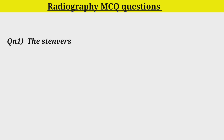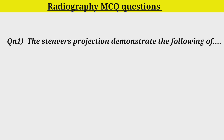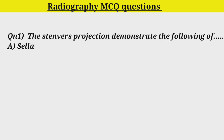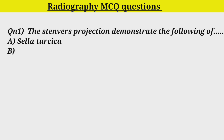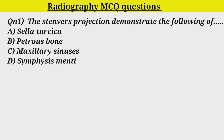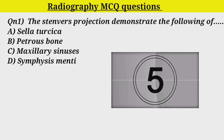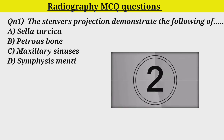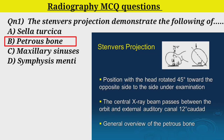Q1. The Towne's projections demonstrate the upflowing of: A. Celatronica, B. Petrous bone, C. Maxillary sinus, D. Symphysis menti. Correct answer is B. Petrous bone.